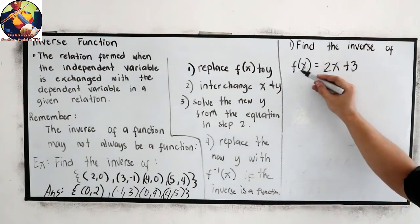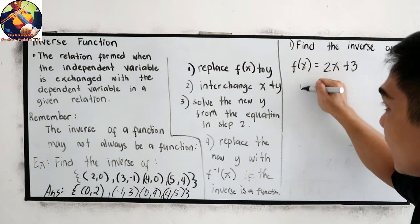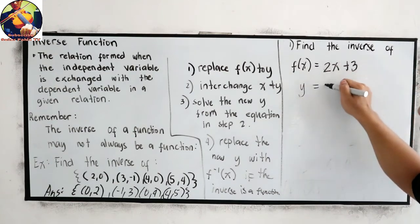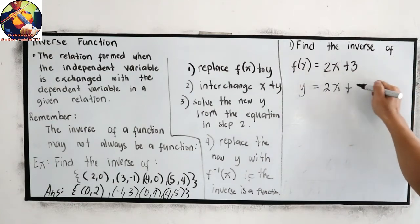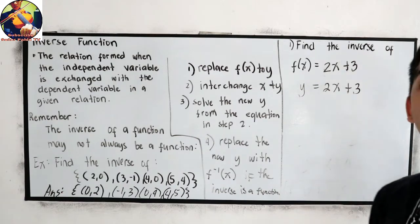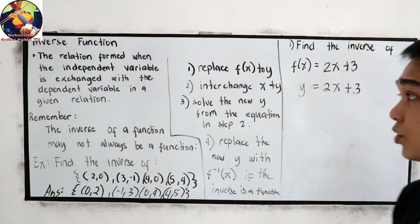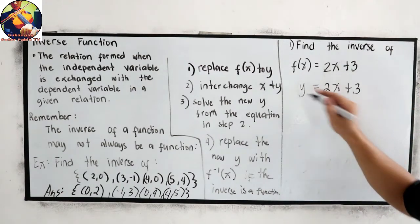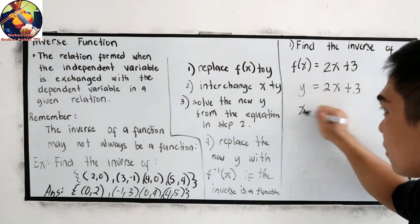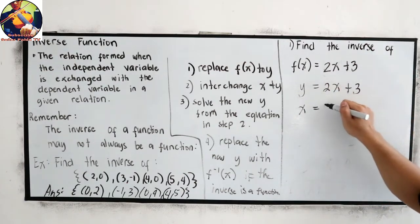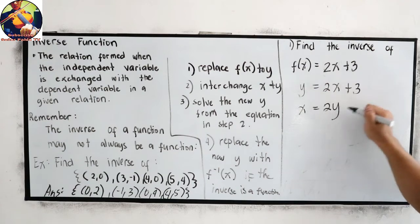So let us solve. Replace, this will become y = 2x + 3. And now, interchange. Y will become x, and x will become y.